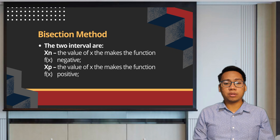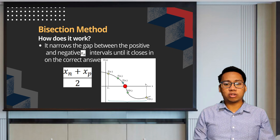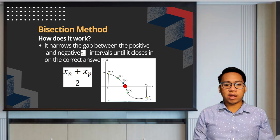In the illustration, you may see the position of the two interval points, point A and point B, where A is the xp while B is the xn. In this method, by repeatedly dividing the interval, the gap becomes narrow, until such time that the value closes in on the correct answer, which is the root of your function.